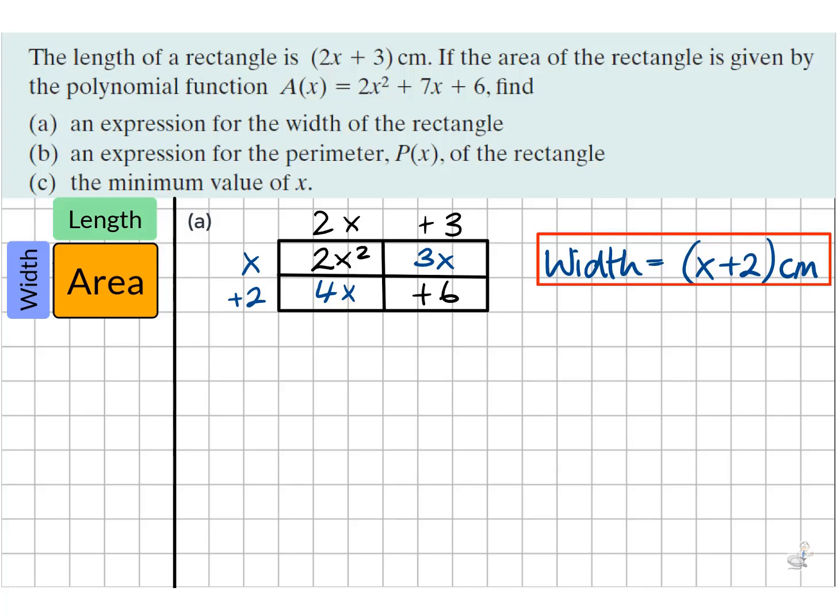Part B is to find an expression for the perimeter. We know the perimeter is if you add up all four sides of the given rectangle, which would mean two lengths and two widths. We're going to multiply 2 by the length and 2 by the width and add these together.